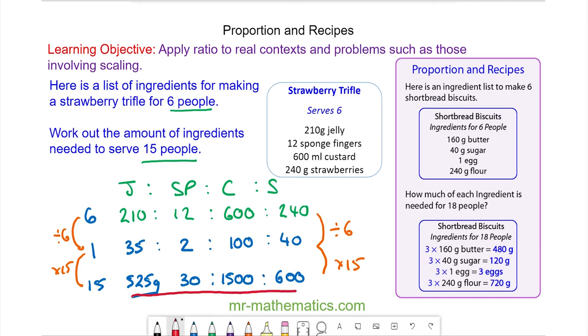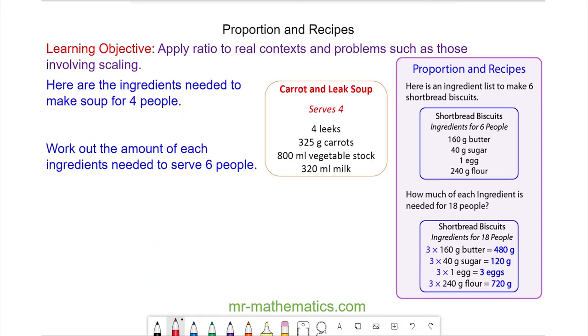So now we have the ingredients needed for 15 people. Let's try one more question. We have the ingredients needed to make carrot and leek soup for four people. Work out how much of each ingredient we need to serve six people. You can pause the video and resume when you're ready.